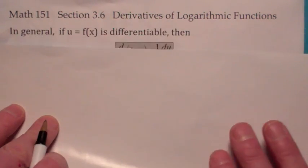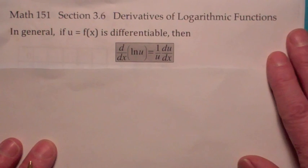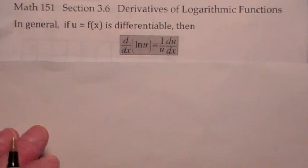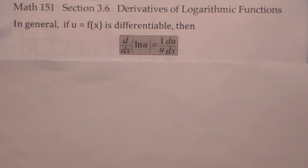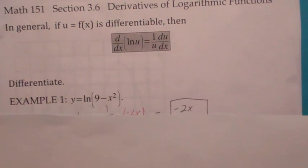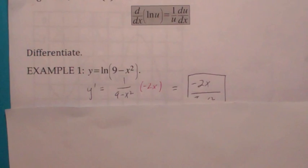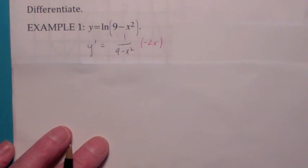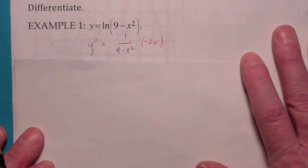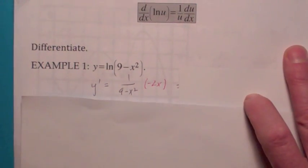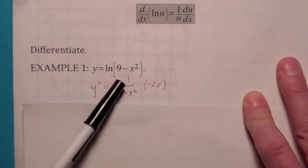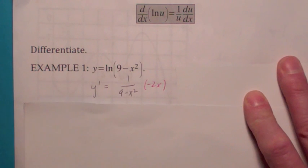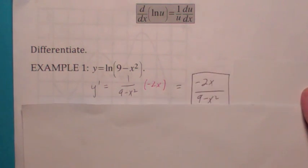In general, by the chain rule, if u is a differentiable function of x, then the derivative of the natural log of u is 1 over u times the derivative of what's inside. For example, suppose you wanted to differentiate the natural log of 9 minus x squared. The rule says when you differentiate that, it's 1 over 9 minus x squared times the derivative of what's inside, which gives you negative 2x over 9 minus x squared.